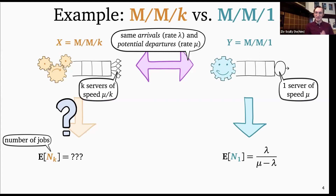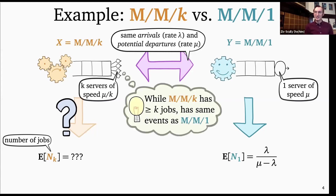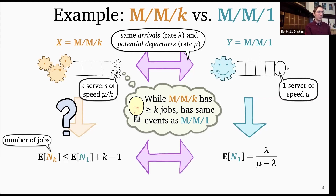I won't walk through the whole argument, but the key idea is that whenever the M/M/K has at least K jobs, it's going to have exactly the same arrival and departure events as the M/M/1. The systems obviously have the same arrivals, and while the M/M/K has at least K jobs, the M/M/1 will also always have at least one job. Both systems will be working at full capacity, so whenever a potential departure occurs, it will occur in both systems.